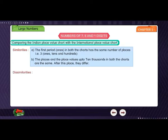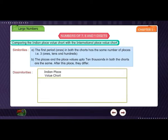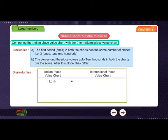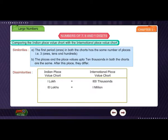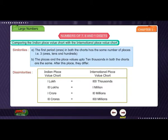Dissimilarities — Indian place value chart vs. International place value chart: 1 lakh is equal to one hundred thousands. 10 lakhs is equal to one million. 1 crore is equal to ten millions. 10 crores is equal to one hundred millions.